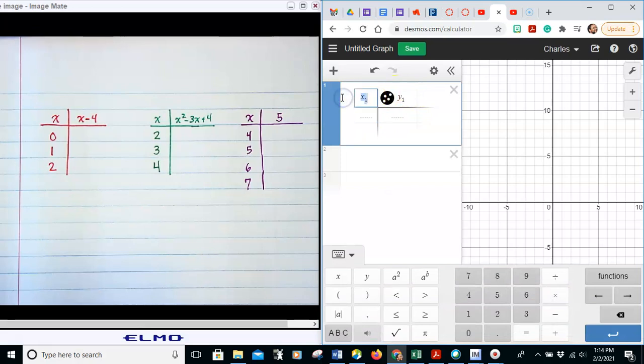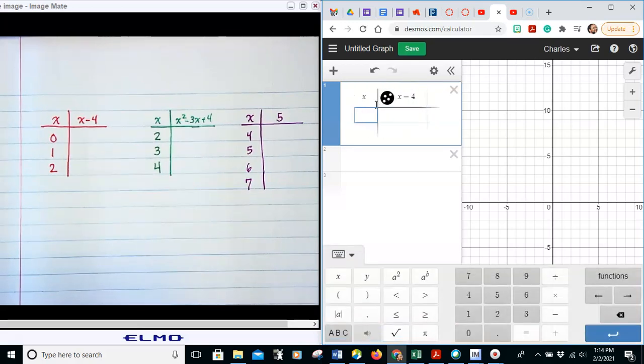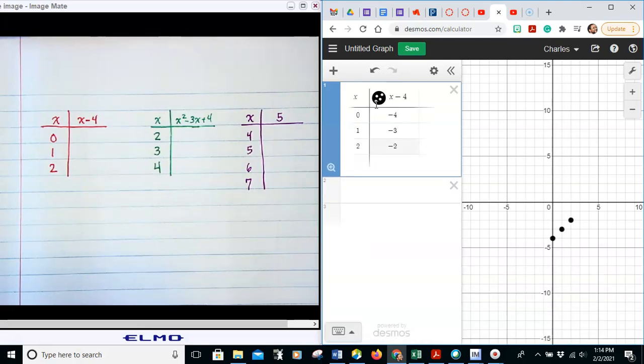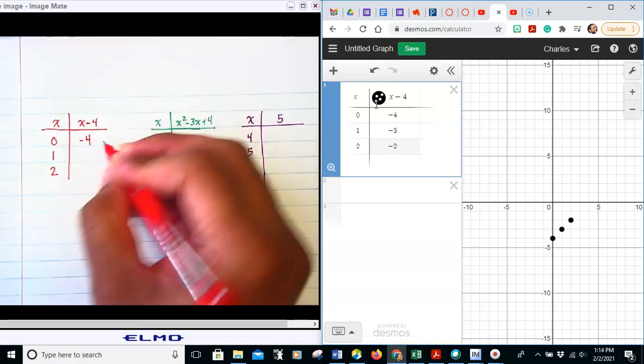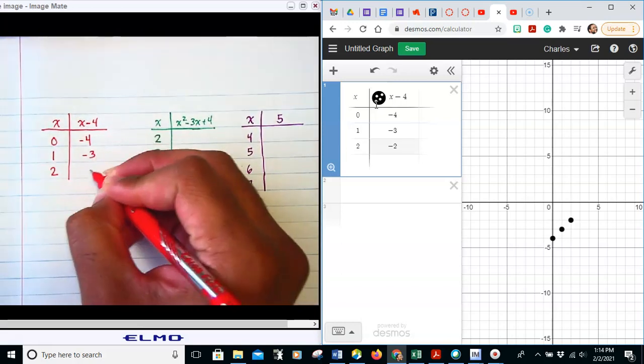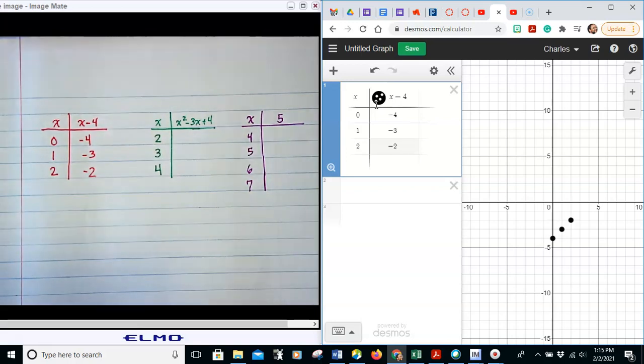Get rid of the x's, get rid of the y. And we're just going to put 1x and we're going to do x minus 4 here. We go 0, 1, 2. And so we just put those values in of negative 4, negative 3, and negative 2.